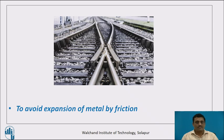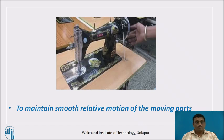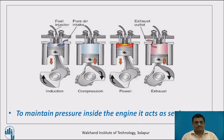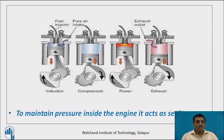Because lubricant does not allow direct contact of two metallic surfaces, it avoids the expansion of metal by friction. Another function is to maintain smooth relative motion of the moving parts. Lubricant also acts as a sealing agent — some machines require proper internal pressure, and the lubricant seals the open parts of the machine so that the required pressure is maintained and the machine works properly.